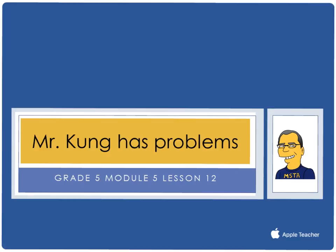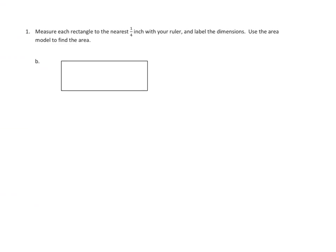Not only am I going to go through a couple of problems, but I'm going to actually show you the process of measuring on my own how I do those problems. So let's look at problem number 1. Problem number 1 asks us to measure each rectangle to the nearest one-fourth inch with your ruler and label the dimensions. Use the area model to find the area.